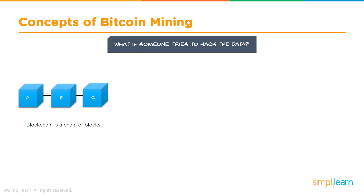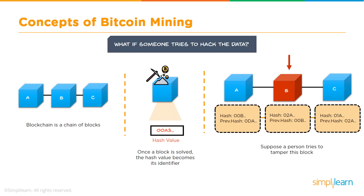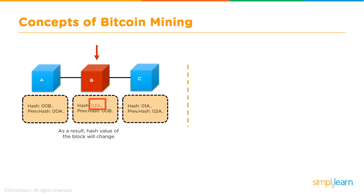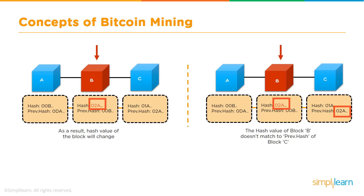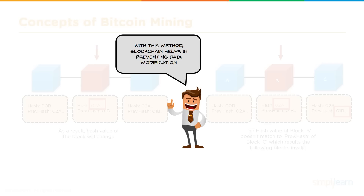What if someone tries to hack the data? Blockchain is a chain of blocks A, B, C. Each block has solved a puzzle and generated its own hash value as its identifier. If a person tampers with block B and changes its data, the hash value of block B will also change, corrupting the chain — block C's previous hash will no longer be valid. To make the entire blockchain valid again, the hacker would have to recalculate the hash values of all subsequent blocks, requiring an enormous amount of computing power that is next to impossible. This is how blockchain prevents data modification.